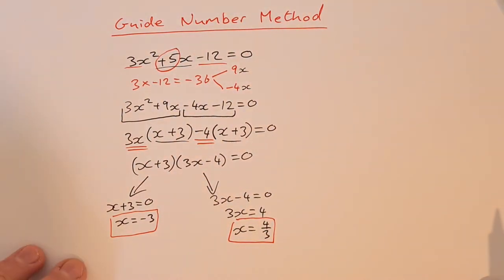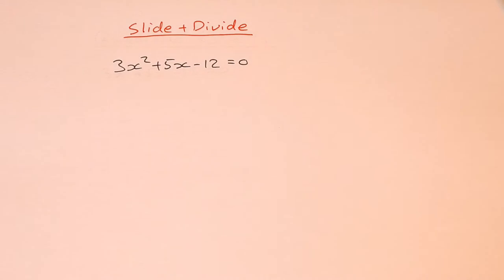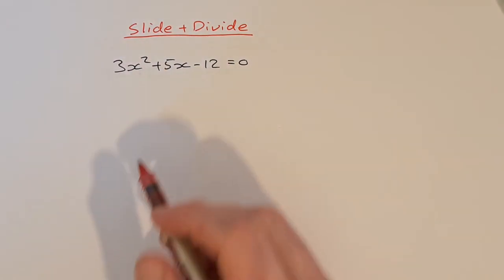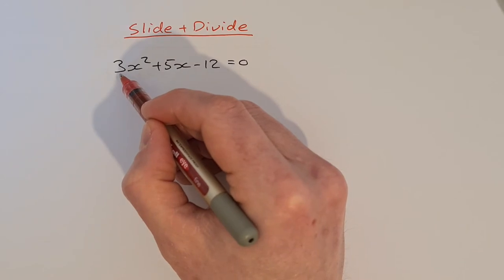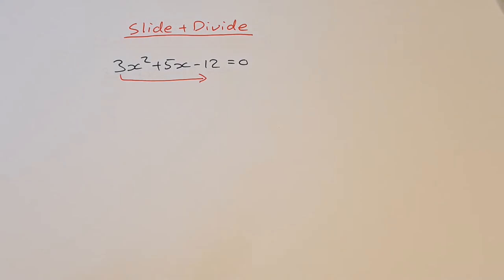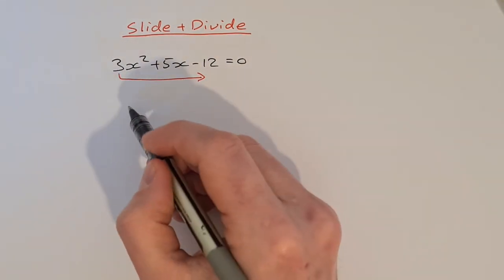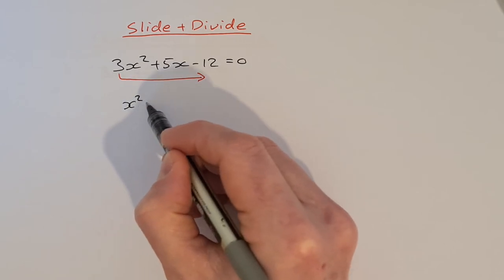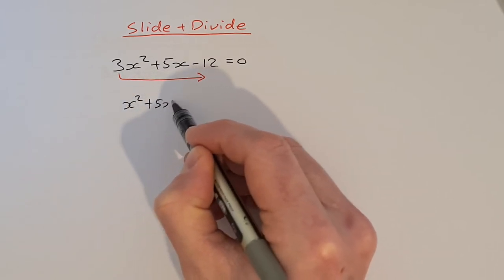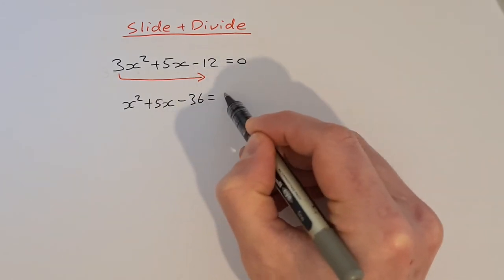Now let's take a look at another method. We're going to do the same equation, but this time we're going to use the slide and divide method, which I think is even easier. What you do is you take the 3 and slide it down to multiply by the 12. We rewrite the equation — the 3 is gone — so we have x squared plus 5x, and 3 multiplied by minus 12 is minus 36, equal to zero.